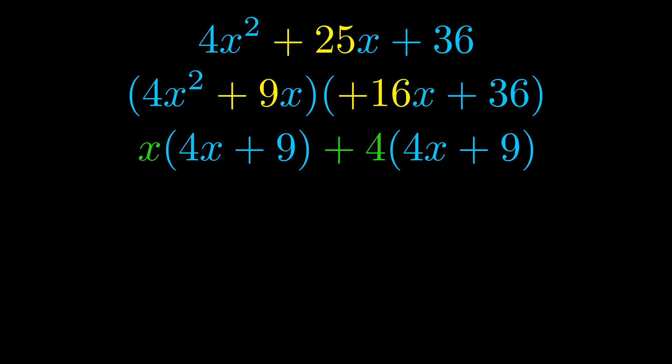Notice also how what remains inside of the parentheses is the same in both cases. The blue values are the same. Those blue values will become one of our factors and we will combine the two green values, the GCFs that we pulled out, to get the other one. And that is our fully factored equation.